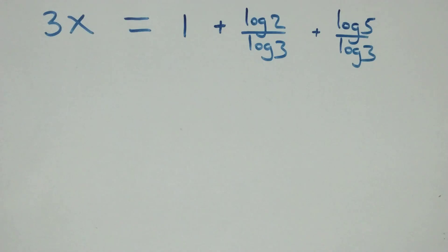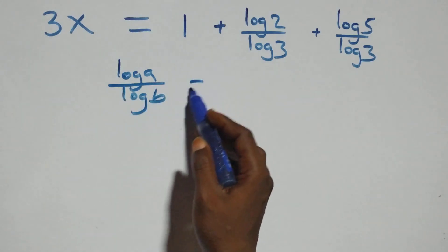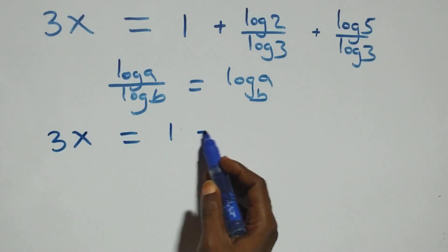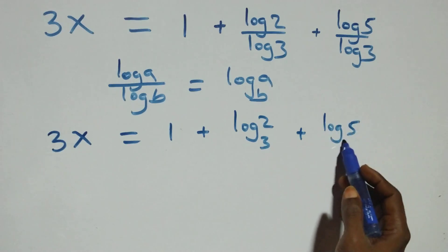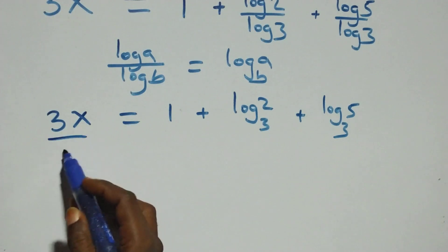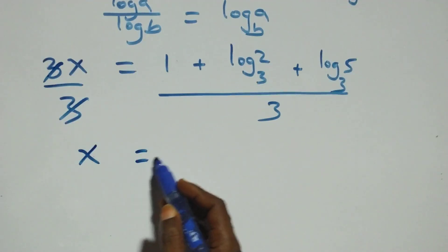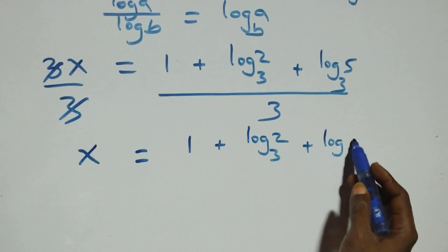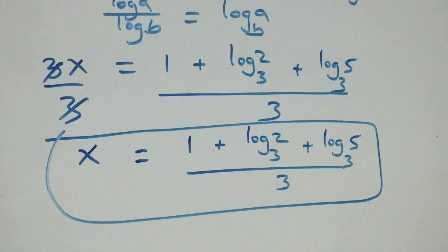Then next step, here we apply change of base: we have log A over log B, which is the same thing as log A to base B. Then what we have here becomes 3x equals 1 plus log 2 base 3 plus log 5 base 3. Then next step, here we divide both sides by 3, and 3 cancels each other, so we have x equals 1 plus log 2 base 3 plus log 5 base 3, all over 3.